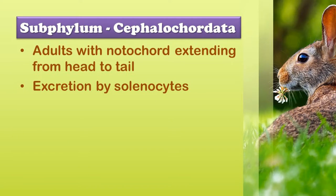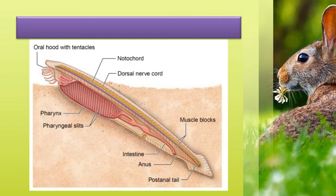Subphylum Cephalochordata. 'Cephalo' means head. Cephalochordates are marine organisms found in shallow water. They are small fish-like slender forms. They have the tubular dorsal nerve cord and pharyngeal gill slits. In adults, the notochord extends from the head to the tail. They have a closed type of circulatory system without a heart. Excretion is affected through the proto-nephridia. Sexes are separate, fertilization is external, and they have a free-swimming larva. Example: Branchiostoma.